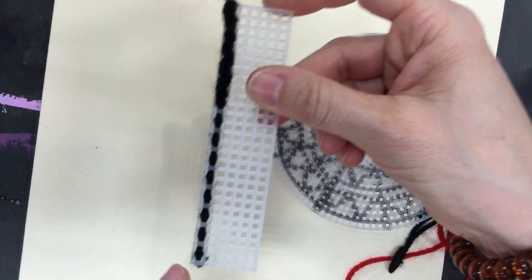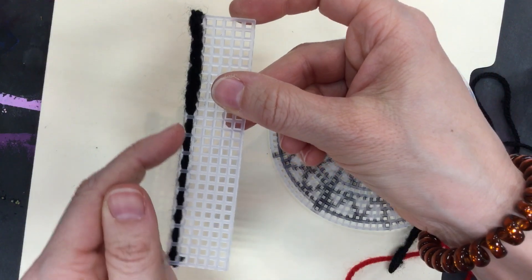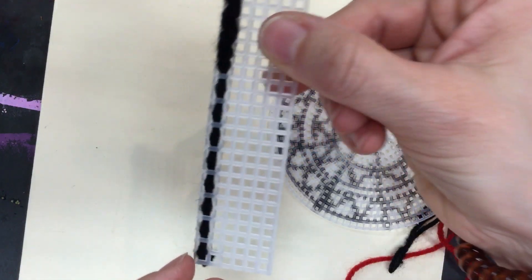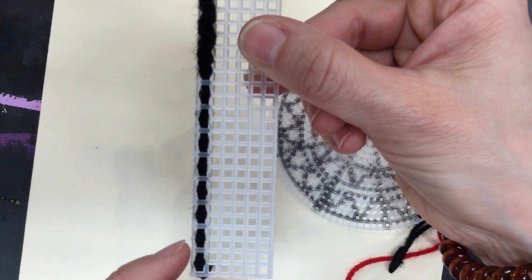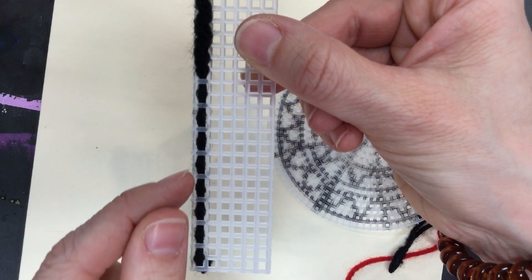When you're sewing these, this is not how it should look. You can see the canvas. Every other little space, I can see a little line of the canvas.